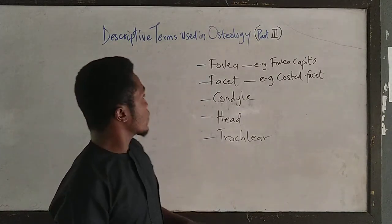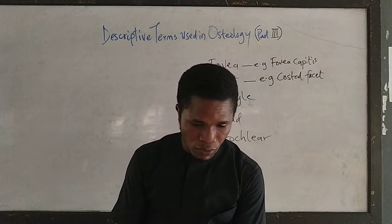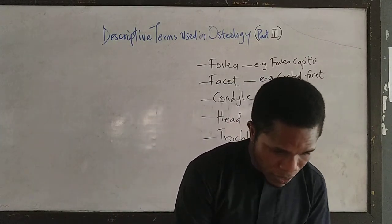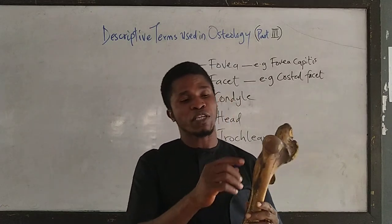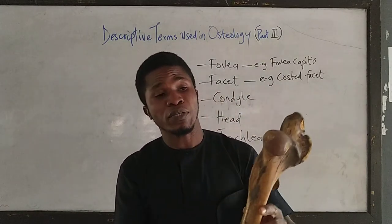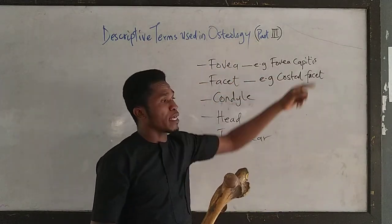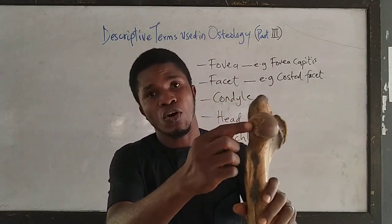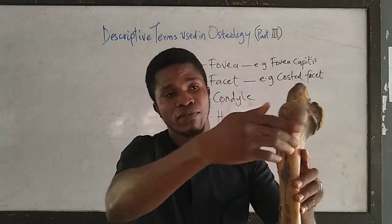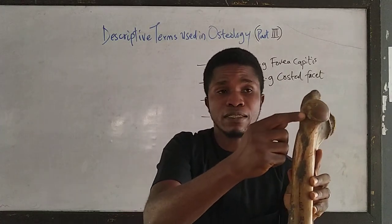We shall start with the term fovea, and as usual I shall be showing you examples from the bones I have on the table here. A fovea is a small depression or a pit present on the surface of a bone. An example is the fovea capitis, which is present on the head of the femur. This is the femur, and on the head of this femur we have a small depression or pit on it. This is called the fovea capitis.